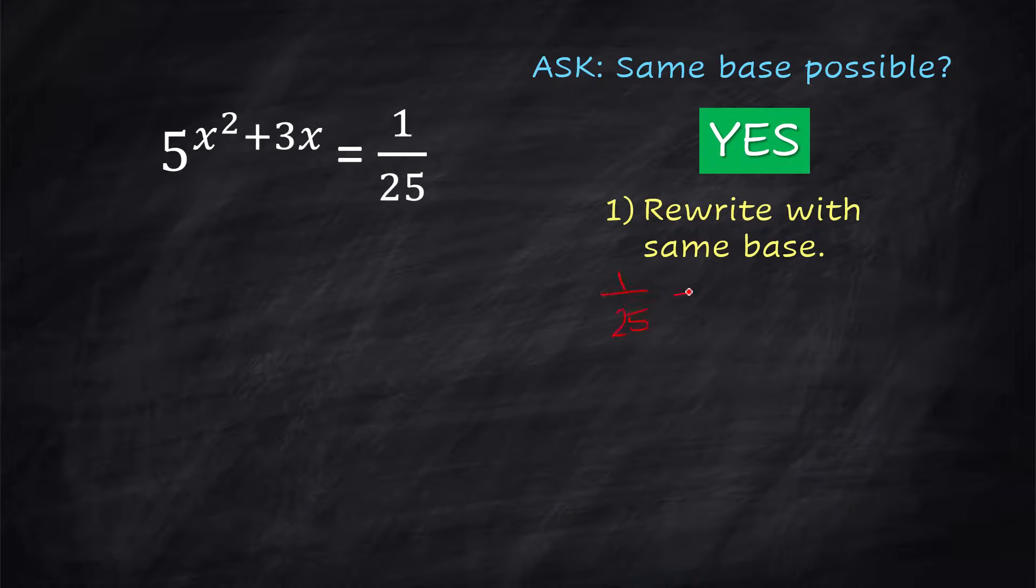1/25, that's the same thing as 1/5^2, right? And since that's in the denominator with a 1 on top, you can rewrite this as 5^(-2). So 5^(x²+3x) = 5^(-2).